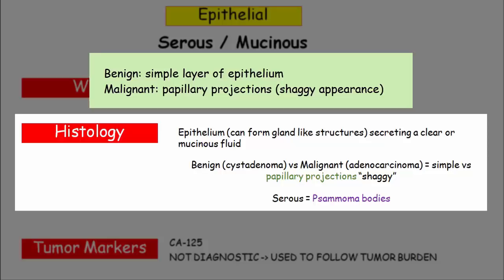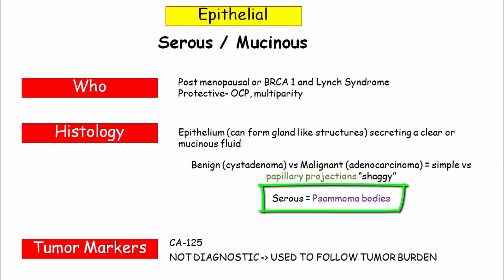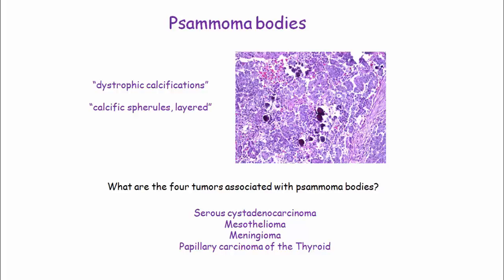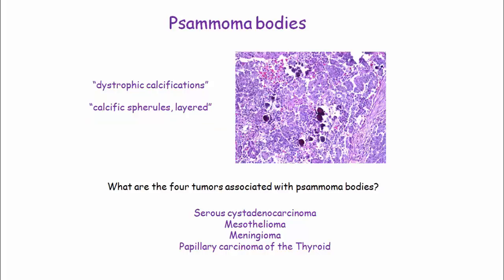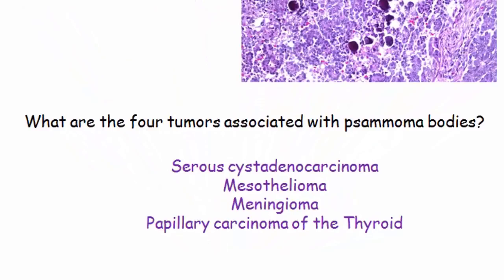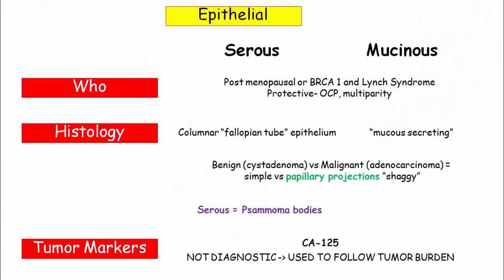The final histological point is that serous cystadenocarcinoma is associated with psammoma bodies. The boards will rarely say 'a tumor with psammoma bodies' directly — instead, they will describe psammoma bodies as dystrophic calcifications or calcific layered spherules, and show you a picture. Make sure you can identify these images, because they will come up in many different tumors. What are the different tumors that have psammoma bodies? Mesothelioma, meningioma, and papillary carcinoma of the thyroid. Last important thing about these tumors is the tumor marker: CA125. As with most tumor markers, this is not diagnostic and should not be used for primary diagnosis, but it is a great way to measure response to treatment and relapse — and that's how they're going to test you on CA125.